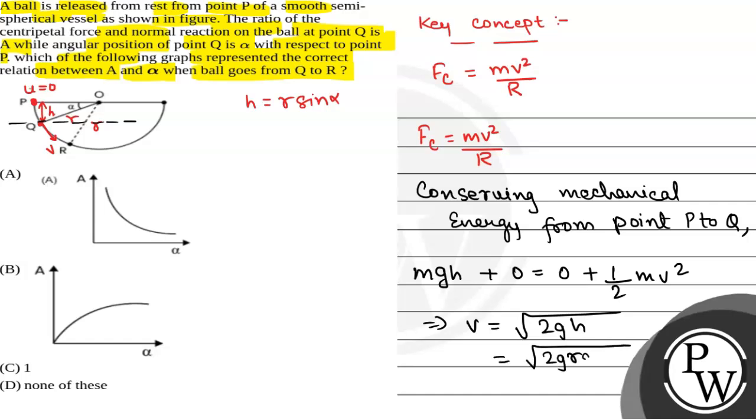V is equal to root over 2gR sine alpha. Centripetal force is equal to mv squared that is m into 2gR sine alpha by R. This will be 2mg sine alpha. This will be the centripetal force.